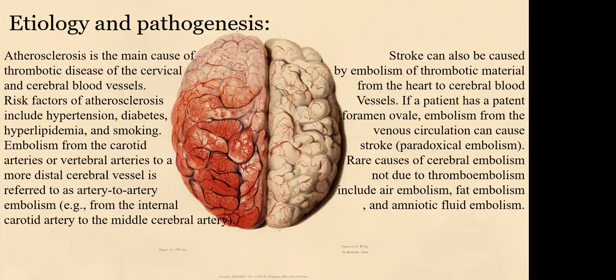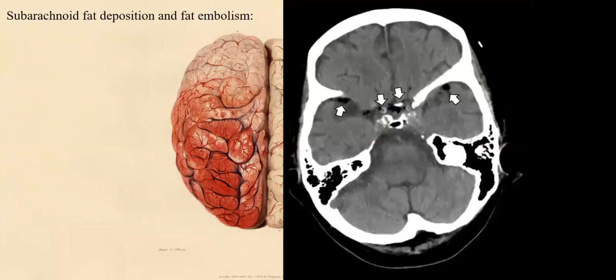Rare causes of cerebral embolism not due to thromboembolism include air, fat, and amniotic fluid embolism. This is an example of subarachnoid fat deposition and fat embolism — a syndrome which is rare but still occurs. As you can see in the MRI, there are black spots which represent cerebral clots or fat embolism.